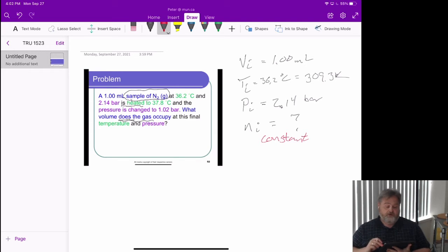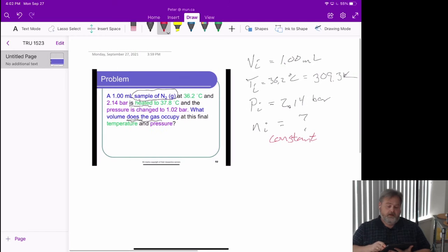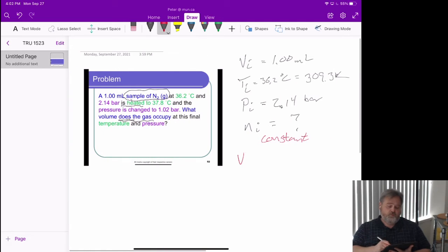Now, from our general form of the equation, once we get there, we also could use our final pieces of information. Well, we're being asked what is the final volume of the gas that we're trying to calculate. That happens at a final pressure of 1.02 bar and at a final temperature of 37.8 degrees Celsius.